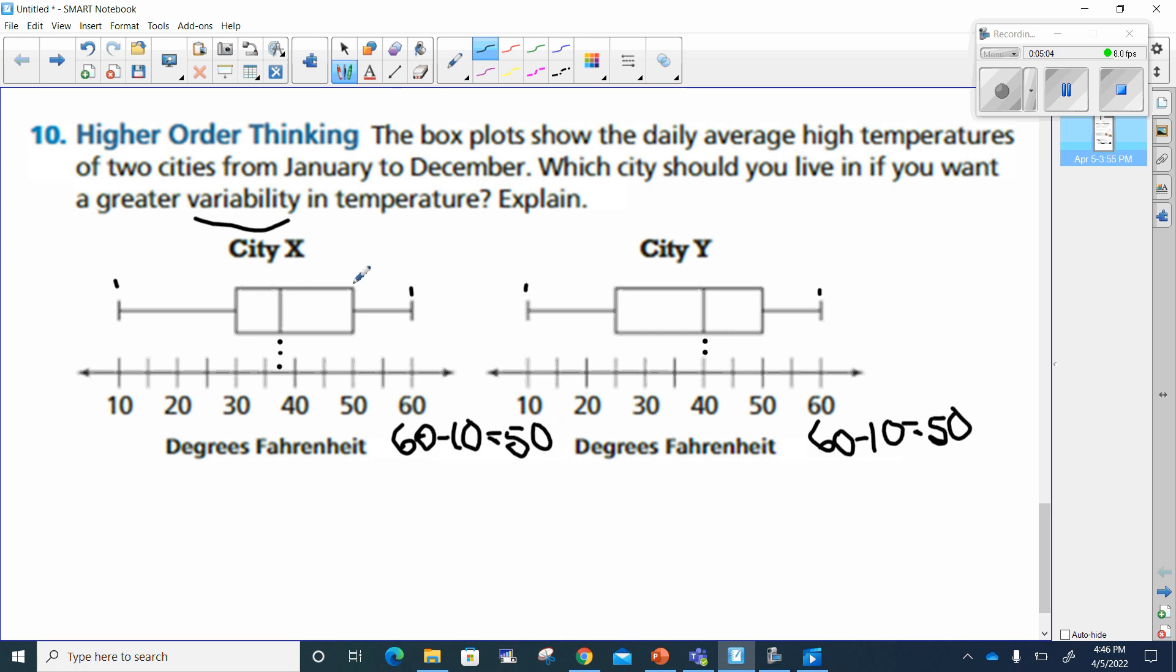So now we have to look at the inner quartile range. That would be 50 minus 30 here. And that's going to equal 20. But on city Y, we have 50 minus 25.